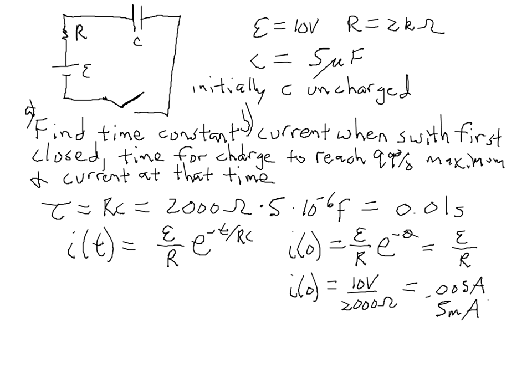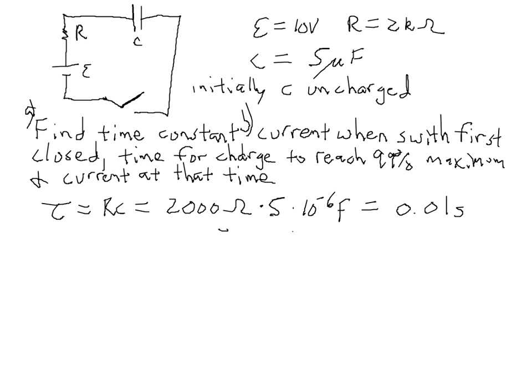I'm going to erase the work for the current since I'm running out of room. So pause if you need to write down the work for the current. Next, part C, we'll call it. Part C is the time for the charge on the capacitor to reach 99% of its maximum value.